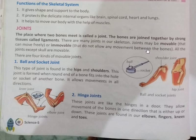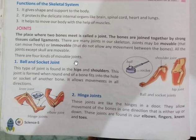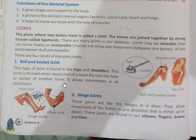Joints may be movable, which can move freely, or immovable, which do not allow any movement between the bones. All joints except the skull are movable. The ball-and-socket joint is found in the hips and shoulders. This joint is formed when the round end of a bone fits into the hole or socket of another bone. It allows movement in all directions.